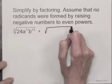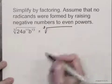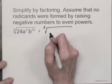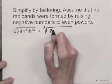Now I'm going to look for perfect cube factors of this radicand. 24 is 8 times 3, and 8 is a perfect cube.